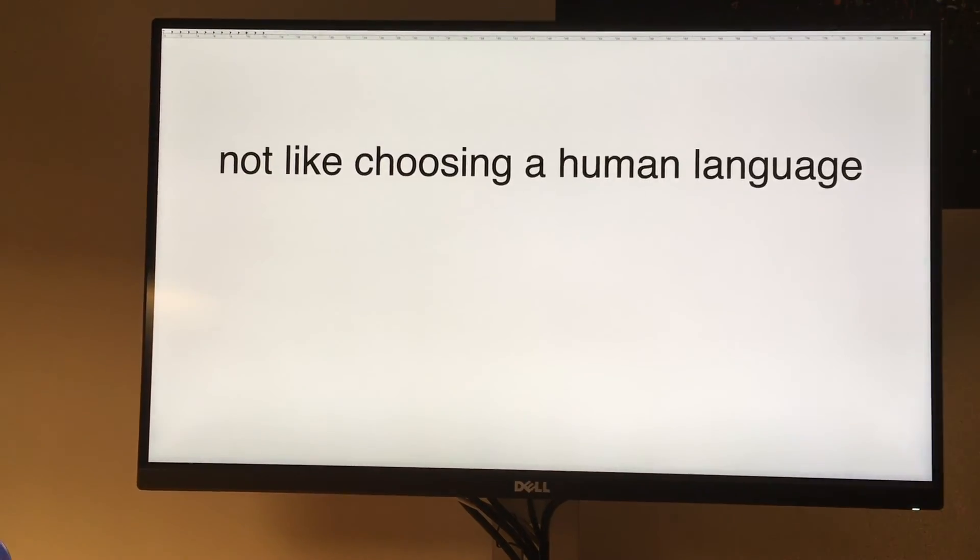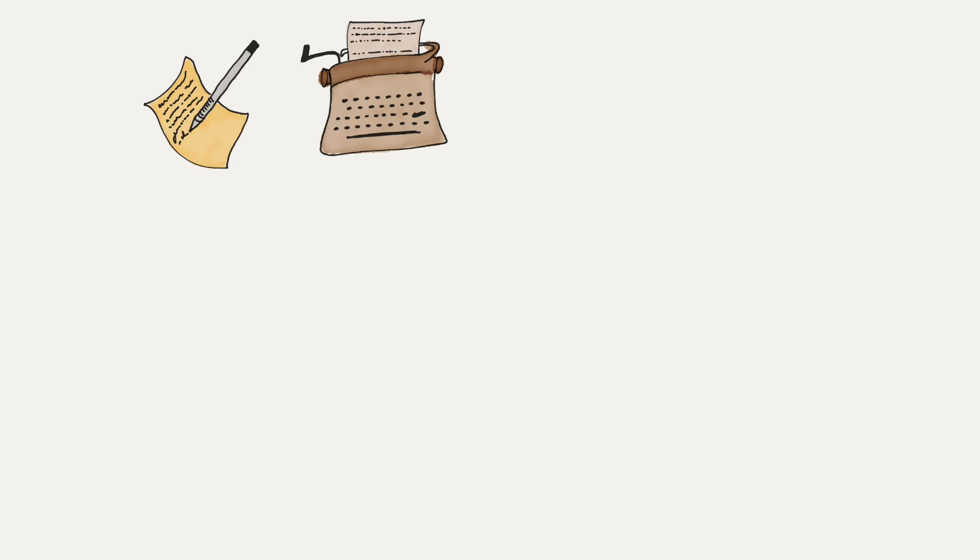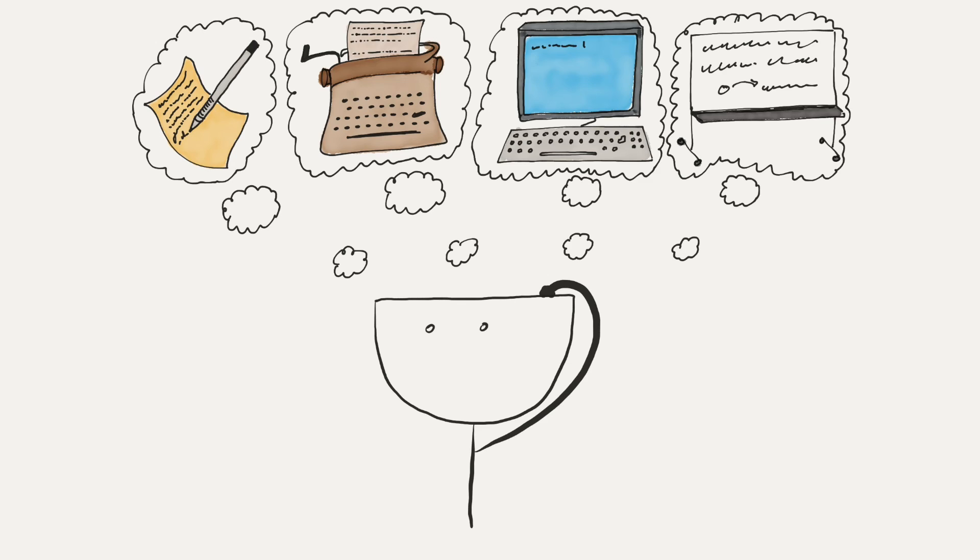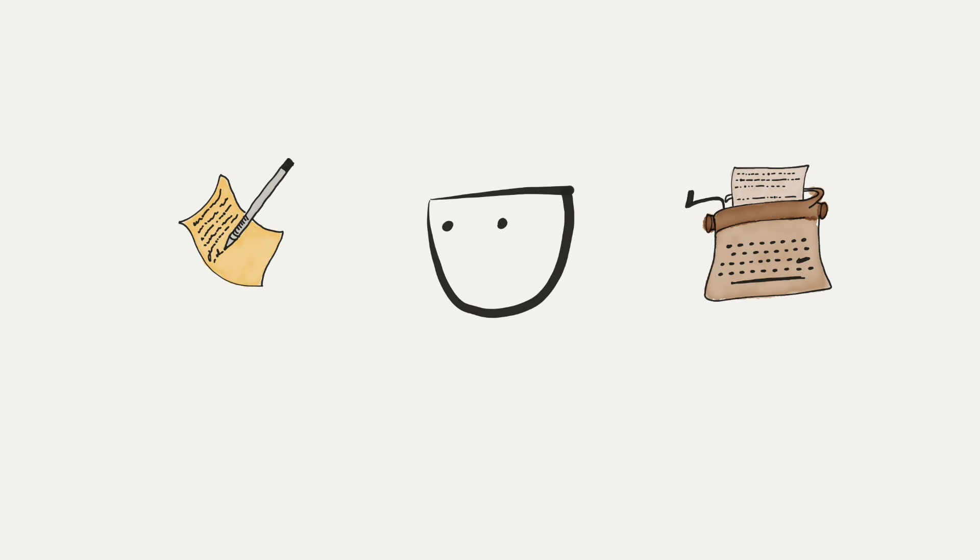You can write a story with pen and paper, using a typewriter, a computer or a whiteboard. Yes, each writing device comes with different capabilities and limitations. And if you are trying to become a writer, it doesn't really matter if you learn to write on paper or on a typewriter.